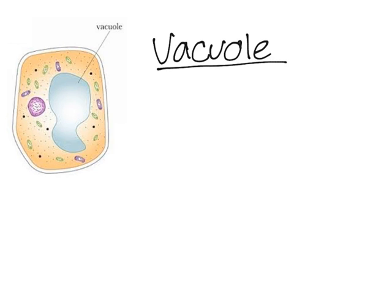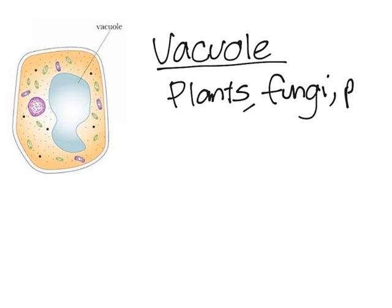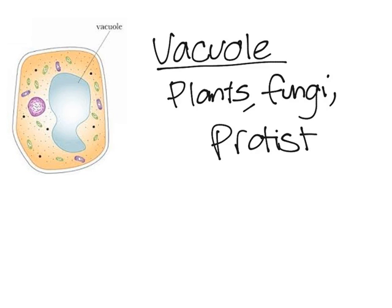In this video I'm going to discuss vacuoles and the functions of vacuoles in animal cells and plant cells. Vacuoles are mostly found in plant cells, fungi, and protists. However, they are also located in animal cells, but they are much smaller and not as abundant. So most of the time when you talk about a vacuole, you talk about a plant vacuole.